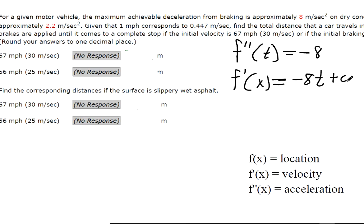Let's see if we have information for helping us find that constant c. It says dry concrete after the brakes are applied until it goes to this. Initial velocity is 67 miles per hour, 67 miles per hour. So that's 30 meters per second. They gave us that conversion. So this is the one we really want. The velocity is 30 meters per second.